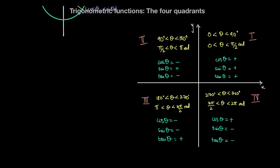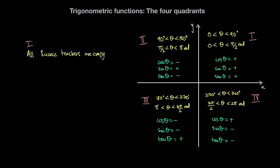A simple way to remember this is by using the mnemonic: 'All Science Teachers Are Crazy.' In the first quadrant, All trig functions are positive. In the second quadrant, Science — only Sine is positive. In the third quadrant, Teachers — only Tan is positive. And in the fourth quadrant, Crazy — only Cosine is positive.